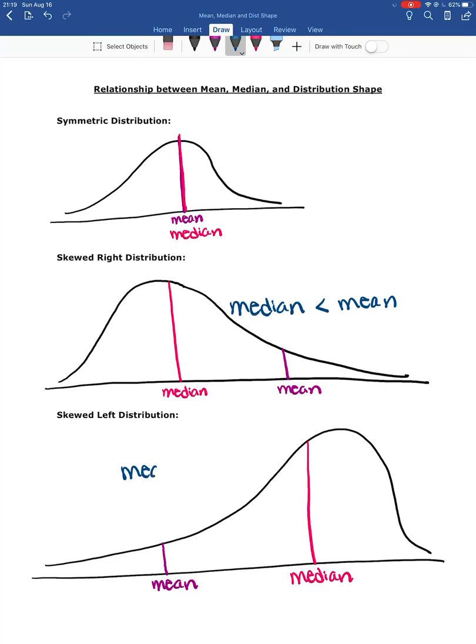In a skewed left distribution, we have our mean and our median, and now the median is the larger number. This is how the shape of your distribution can affect your mean and median values.